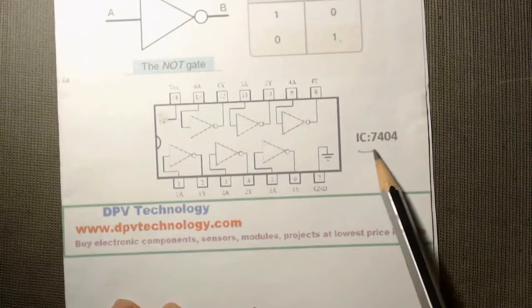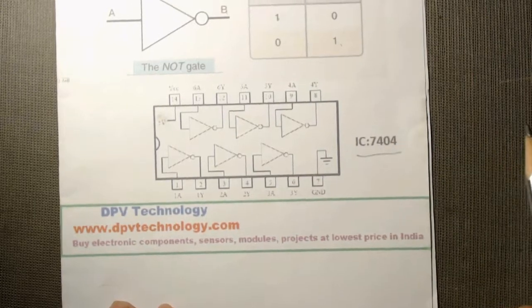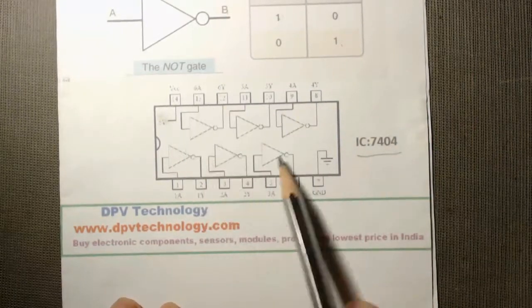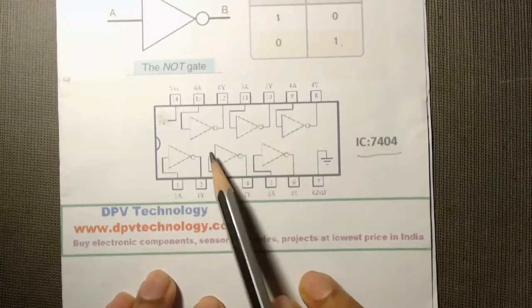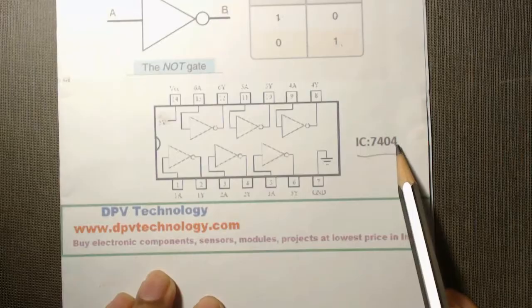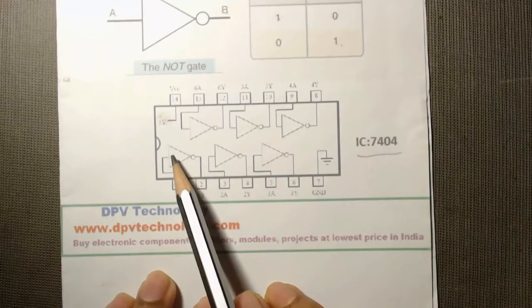Here is the IC number of a NOT gate, 7404. Here is the diagram of a NOT gate IC. We can see in a NOT gate IC, that means in a 7404 IC, there are 6 NOT gates.